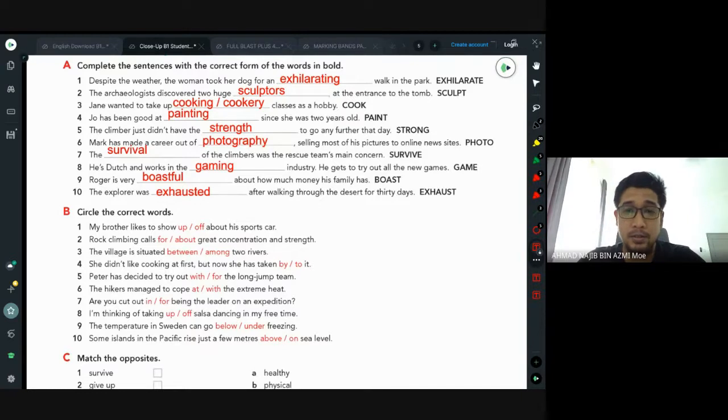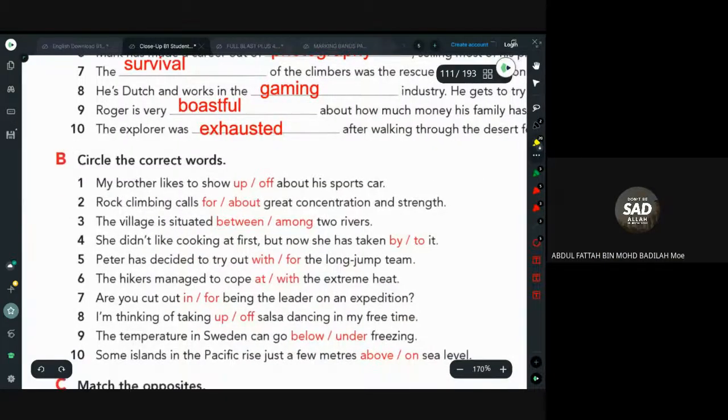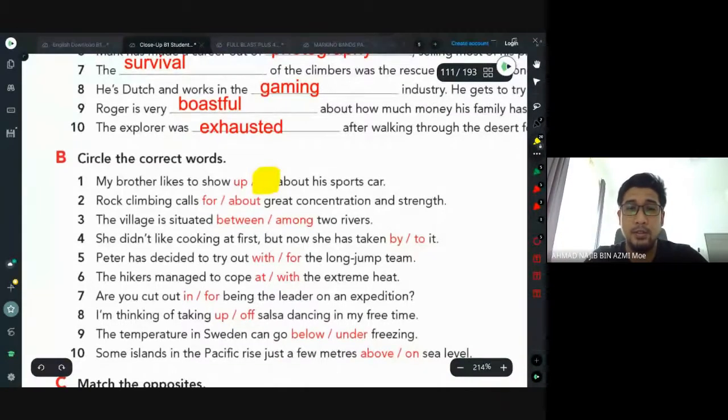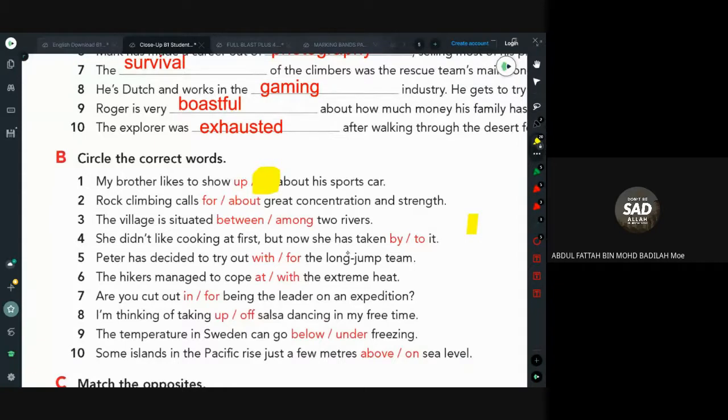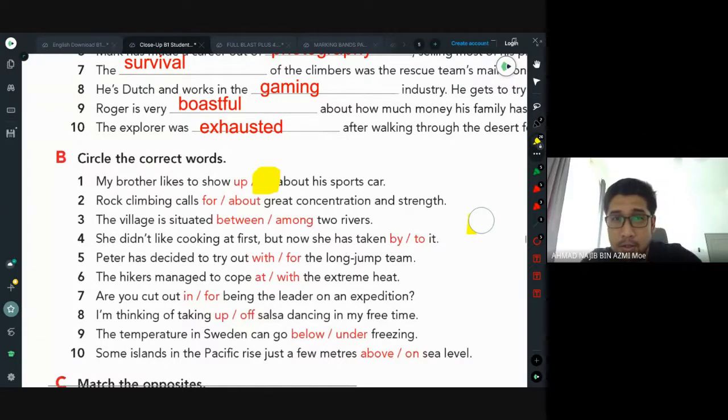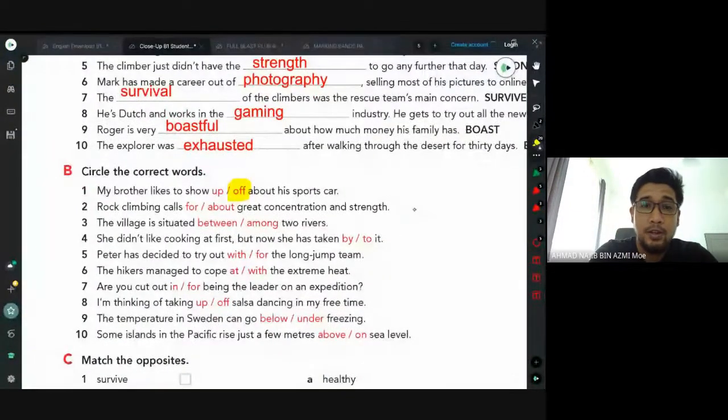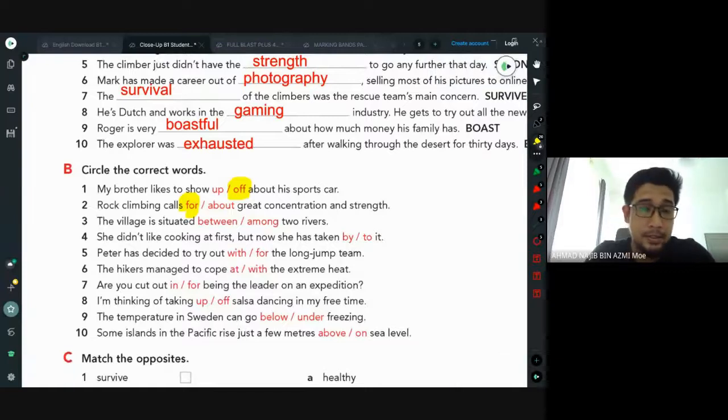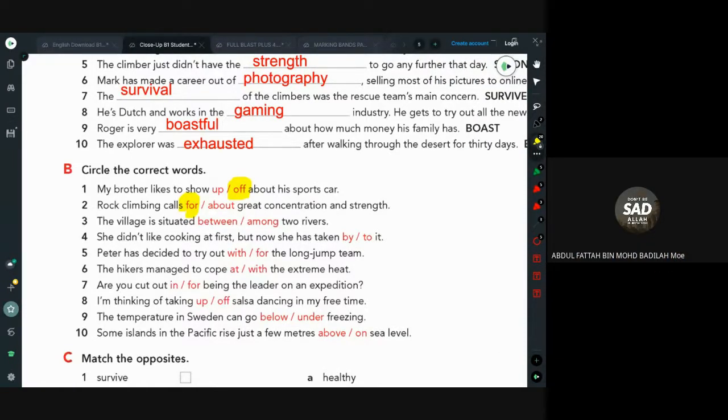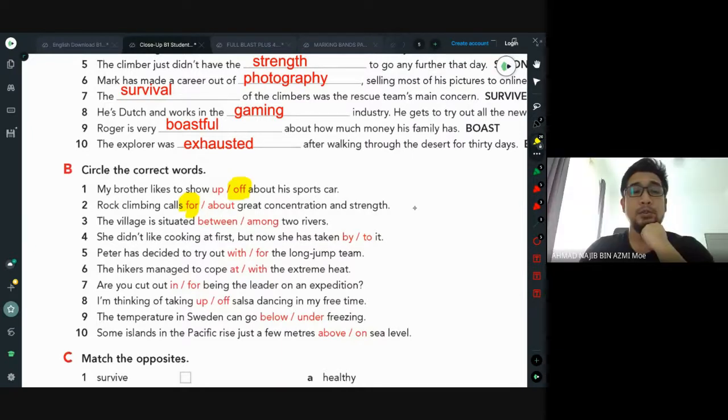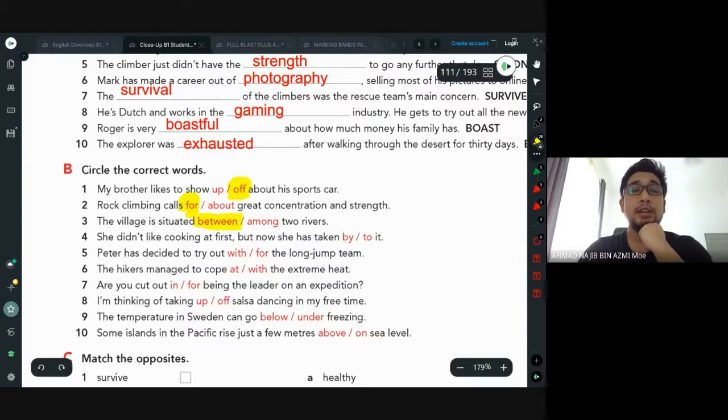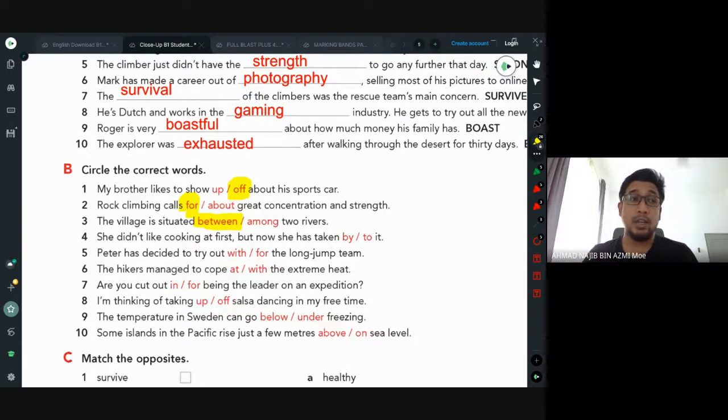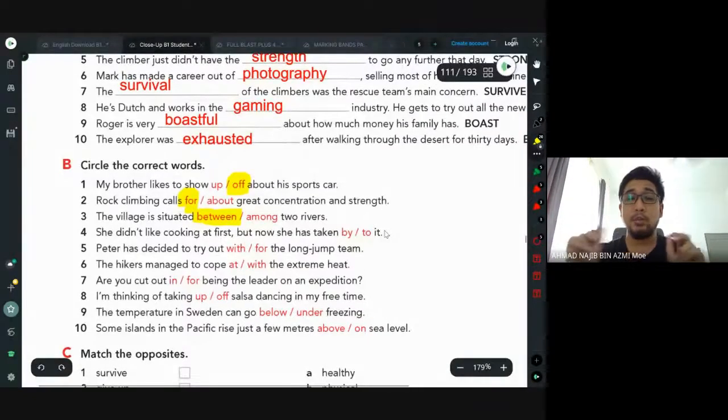Fata, can you do B? My brother likes to show off about his sports car. Correct, show off. Number two: rock climbing calls for great concentration and strength. The village is situated among two rivers. We cannot use among here, it is between. Antara two benda we have to use between.